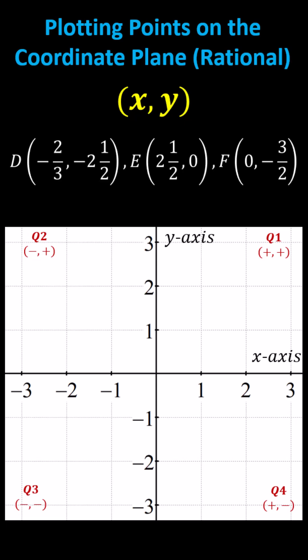We want to plot the given points on the coordinate plane. Point D has coordinates negative two-thirds comma negative two and a half, which indicates x equals negative two-thirds and y equals negative two and a half. We begin by locating negative two-thirds on the x-axis and negative two and a half on the y-axis.